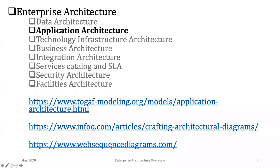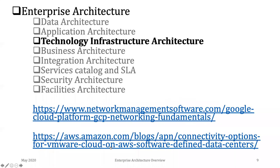Next is technology infrastructure architecture. This deals with your infrastructure — the people who are managing and keeping your infrastructure up to date. You could be on AWS cloud or on-premise. These people need an architecture viewpoint on what the product is and how it's designed.